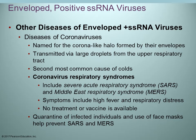Diseases of the coronaviruses: this is a group of viruses named because of their envelope. They have spikes, and when viewed under an electron microscope they appear to have a halo — that's where the name comes from. They usually cause upper respiratory infections, transmitted by droplets from the respiratory tract.